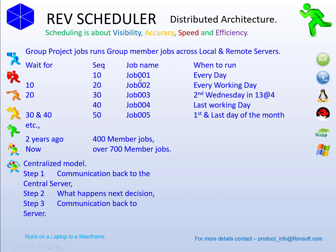Imagine that in a centralized model. After step one completes, it communicates back to the central server to get the 'what happens next' decision, which comes back and then decides to submit the next job. So there are three steps in the process — going back and forth for every decision. Imagine doing that for over 700 member jobs every night, compared to the distributed model that makes the decision locally and then executes the next job.